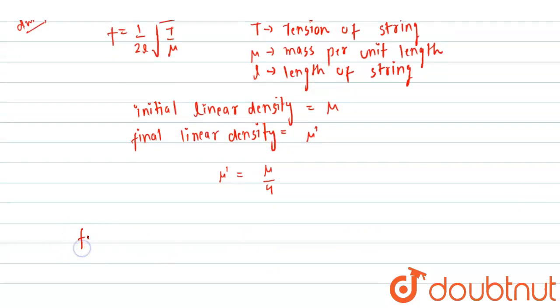Okay, so now when we write the fundamental frequency in both the cases, we get that fundamental frequency in first case is given as f1, which is equals to one upon two l, square root of t upon mu, and